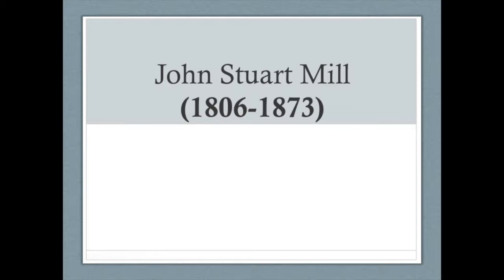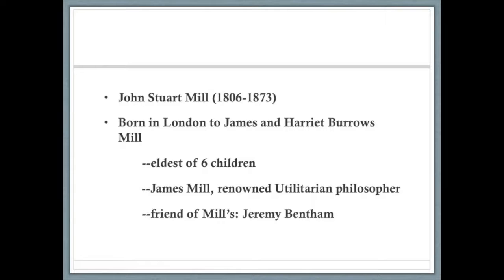Mill's dates are 1806 to 1873. He was born to James and Harriet Burroughs Mill, the oldest of six children. James Mill was a utilitarian philosopher whose best friend was Jeremy Bentham. Jeremy Bentham was definitely the more famous and more accomplished of the two, but James Mill was an accomplished author in his own right. Bentham was the big grand poobah of utilitarianism. Looking back now, his philosophy may seem a little simplistic, because over time people like John Stuart Mill modified utilitarianism and made it more reasonable.